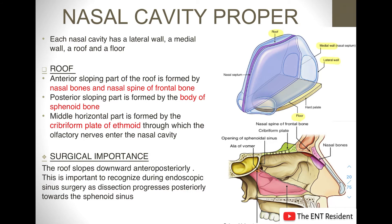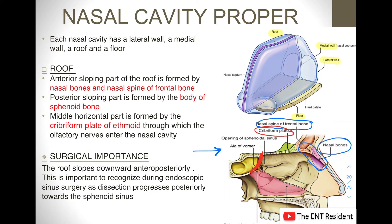First, the roof. The anterior sloping part of the roof is formed by the nasal bones and the nasal spine of the frontal bone — as you can see, this is the nasal bone and this is the nasal spine of the frontal bone. Next, the posterior sloping part is formed by the body of the sphenoid bone. The middle horizontal part is formed by the cribriform plate of the ethmoid bone, through which there are small openings through which the olfactory nerves enter the nasal cavity.